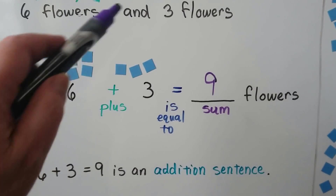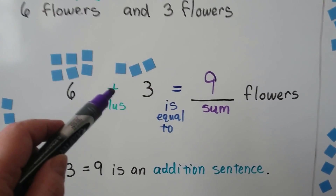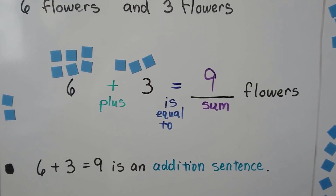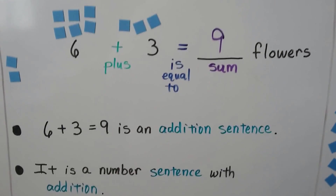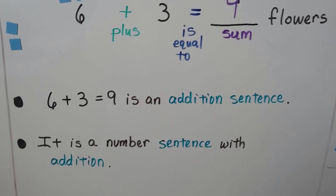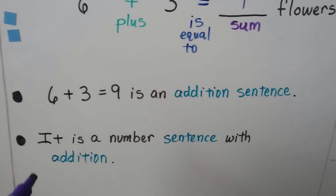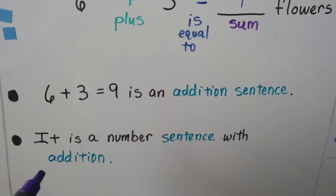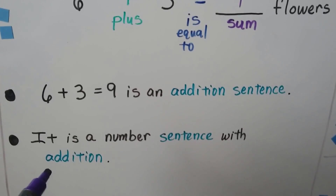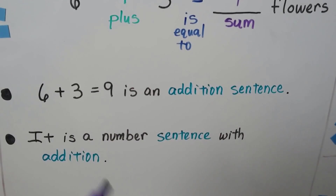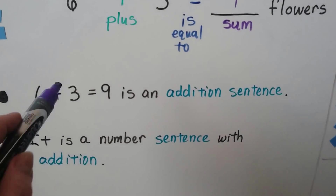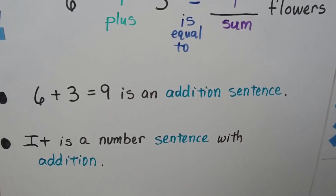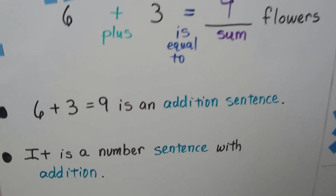For the 'and,' we use the plus sign. It is a number sentence with addition — that's an addition sentence. It's a number sentence that has addition in it. It's got a plus sign.